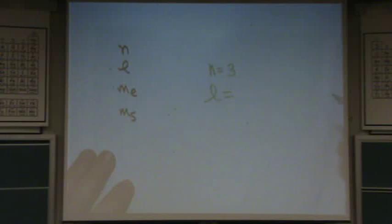What could L be? It can be zero, one, or two. If it's zero, that's three S. If it's one, that's three P. And if it's two, that's three D.